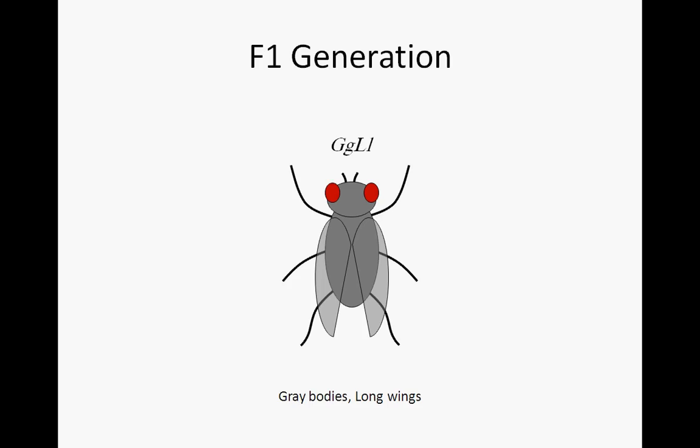These flies will phenotypically have gray bodies and long wings — the dominant traits. This is the so-called F1 generation. In order to proceed to the F2 generation, we must cross two of these heterozygous individuals from the F1.